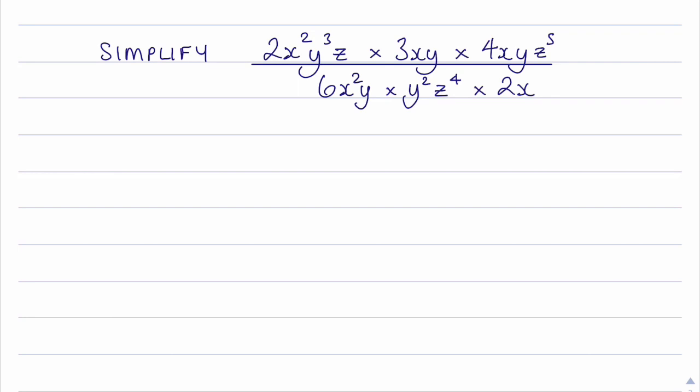So looking at the numerator, I'm going to deal with the numbers first. So I've got the 2, the 3, and the 4, and obviously they are multiplied. So 2 multiplied by 3 is 6, and 6 multiplied by 4 is 24.